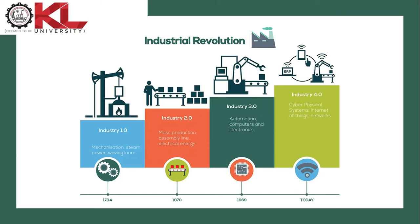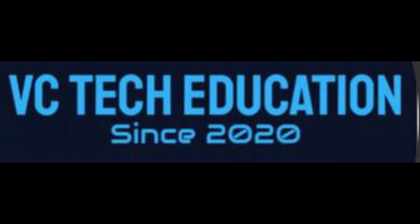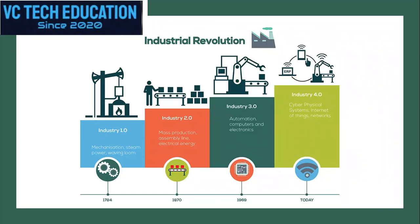Industrial Revolution IOT. IOT, that is Internet of Things, as the need of Internet of Things — Industrial IOT and Industry 4.0 for Industrial Revolution are interrelated.